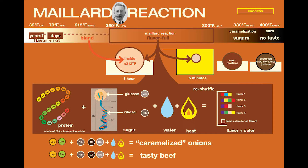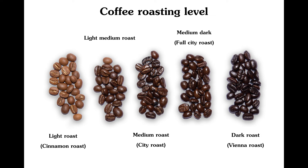Body refers to the thickness and weight of the coffee in the mouth. Light roasts tend to have a lighter body while dark roasts have a thicker and heavier body. Roast degree is a measure of how long and at what temperature the beans were roasted. Light roasts will have a higher acidity and a lighter body, while dark roasts will have less acidity and a thicker body.